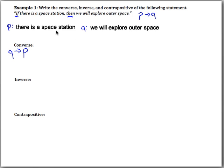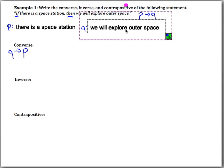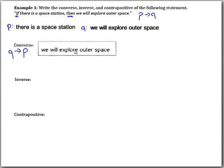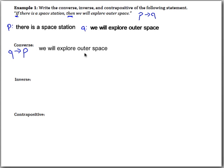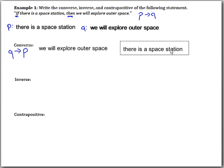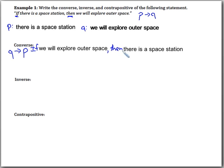Thanks to technology I can do this very easily. I'm just going to take this Q and put it first, then take this P and put it second. So the converse is: 'If we will explore outer space, then there is a space station.' We just switched the P and the Q.